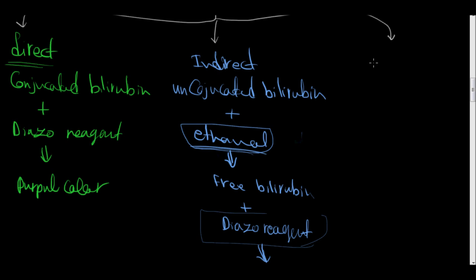In case of having both the conjugated and the unconjugated bilirubin, it is called biphasic reaction, biphasic Van Den Bergh reaction.